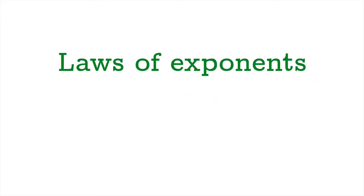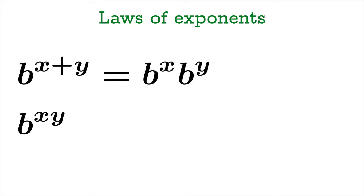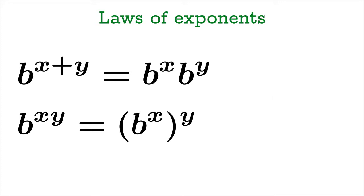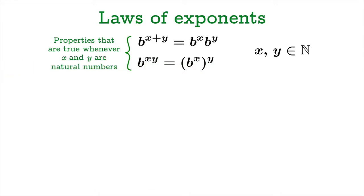Laws of exponents: b to the x plus y equals b to the x times b to the y. And b to the x times y equals b to the x raised to the y. These statements are more or less obvious whenever your exponents x and y are natural numbers — the counting numbers 1, 2, 3, etc. You can look at a few examples and convince yourself these work whenever x and y are natural numbers.